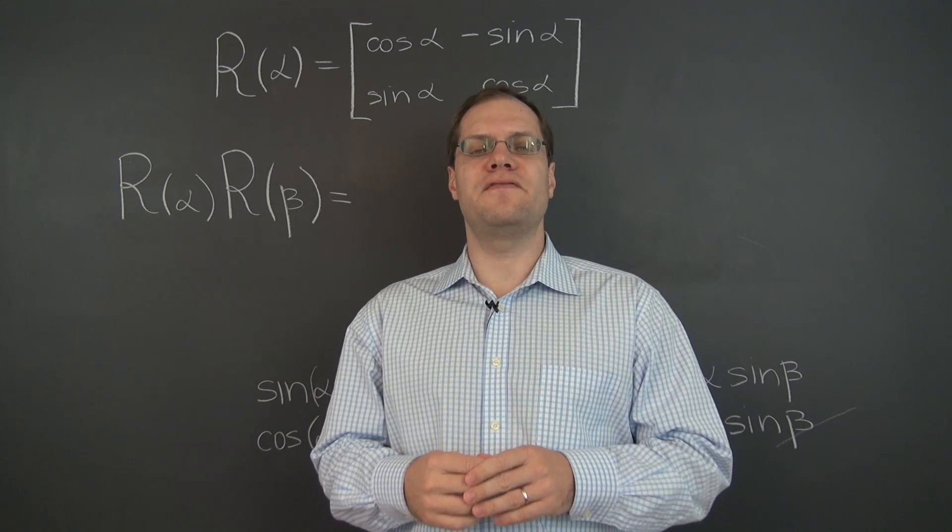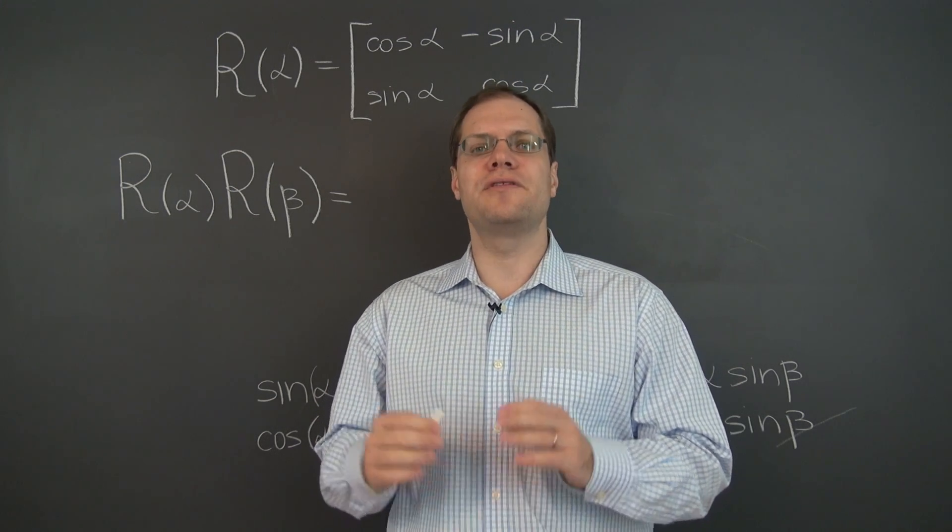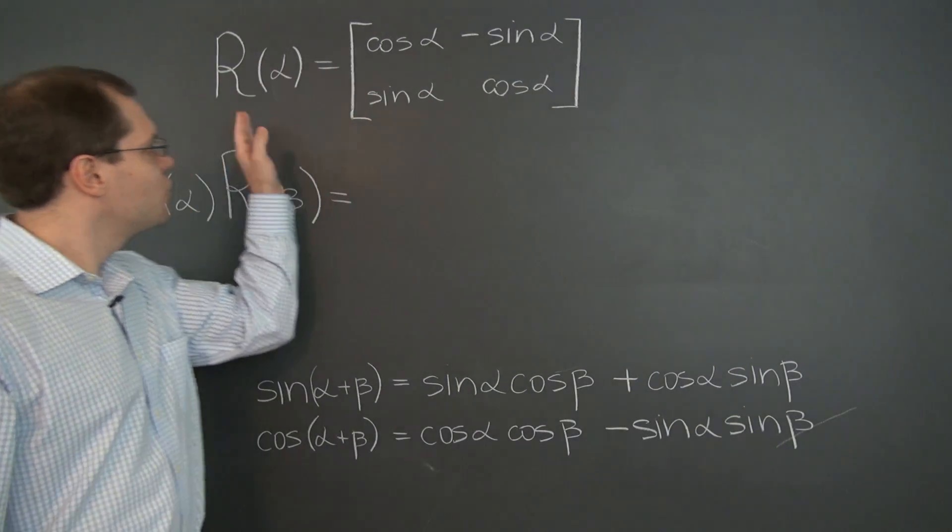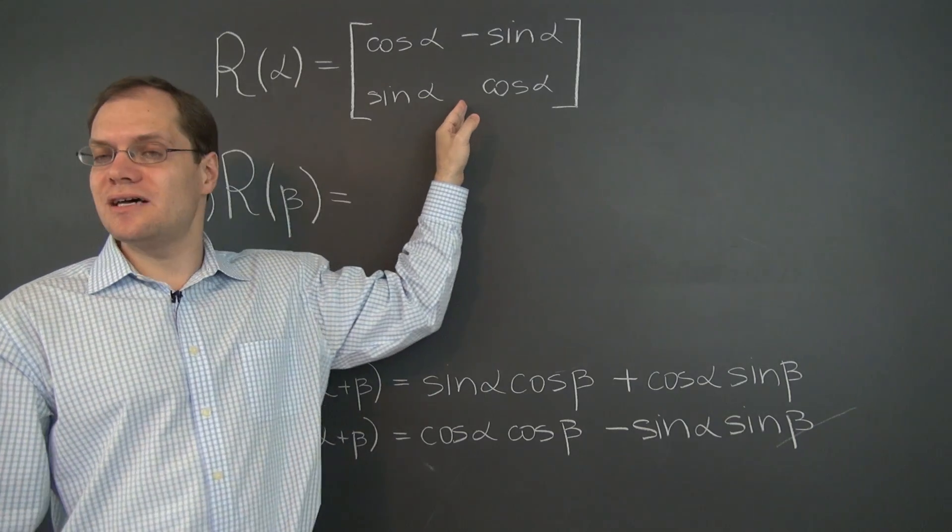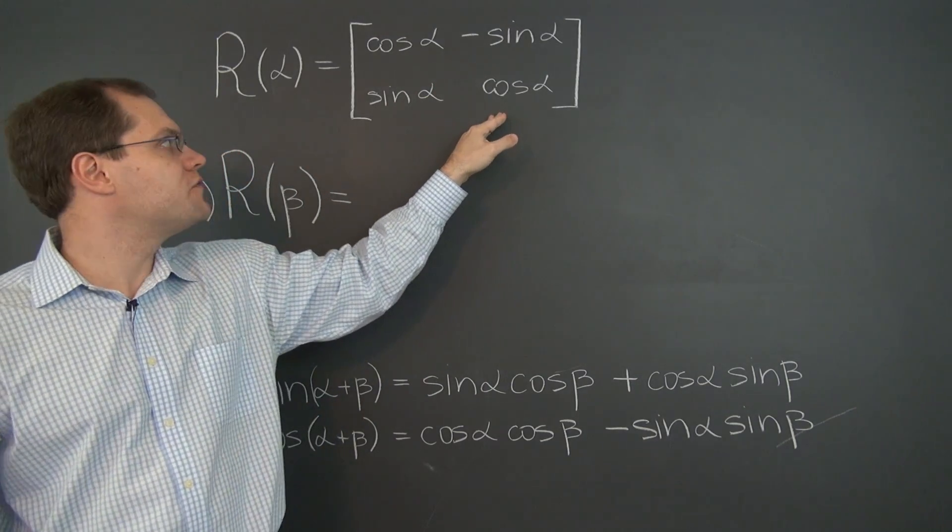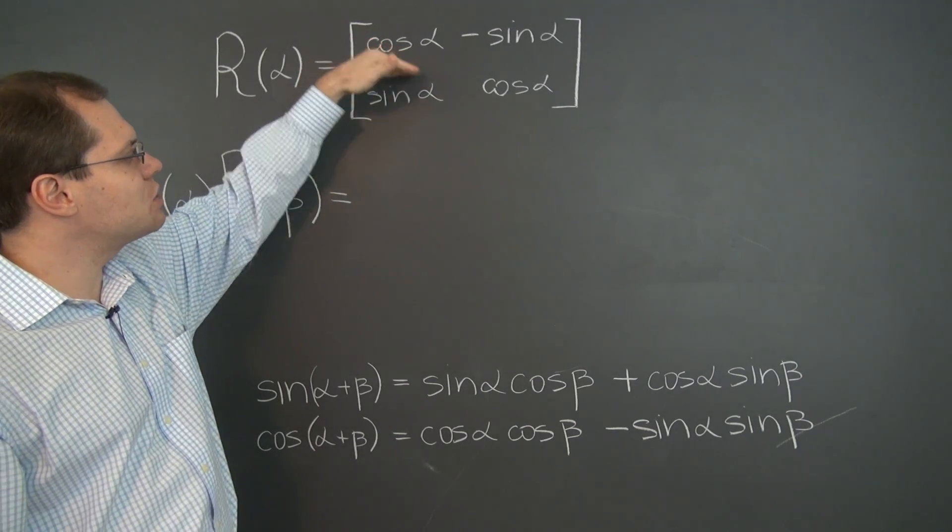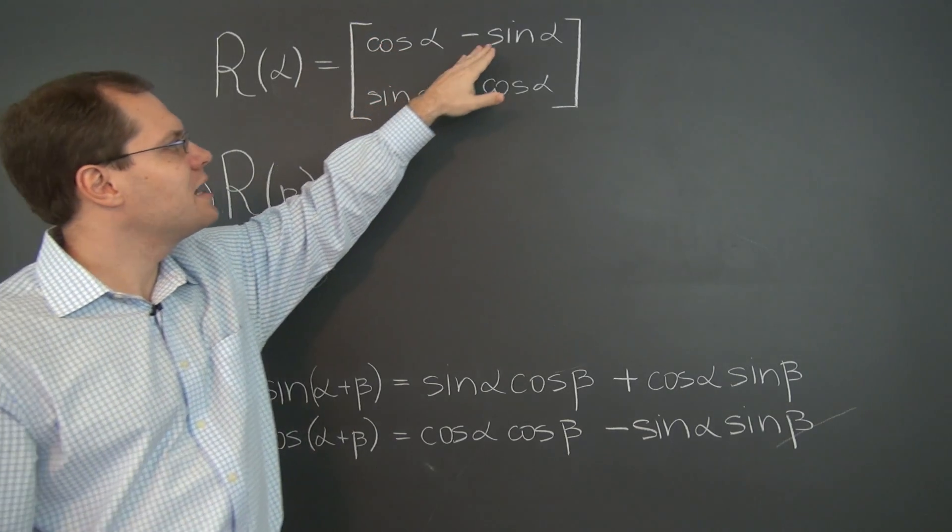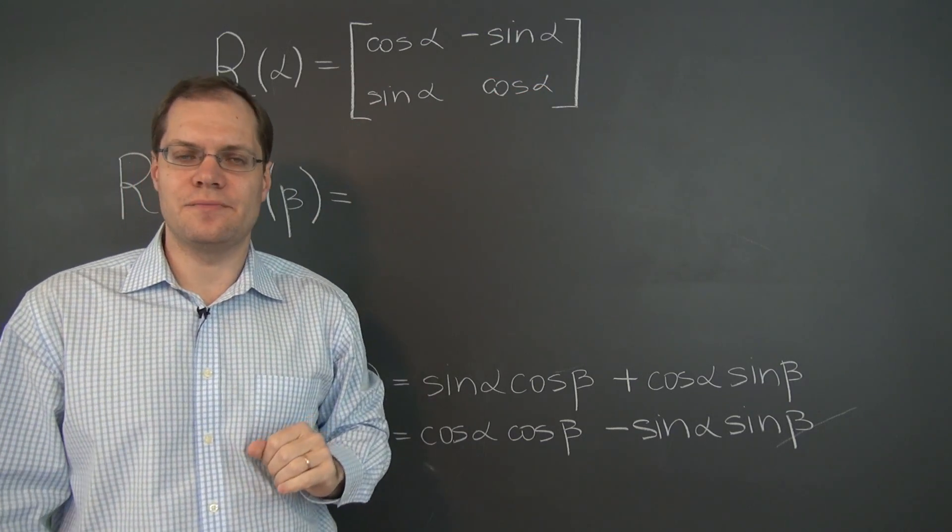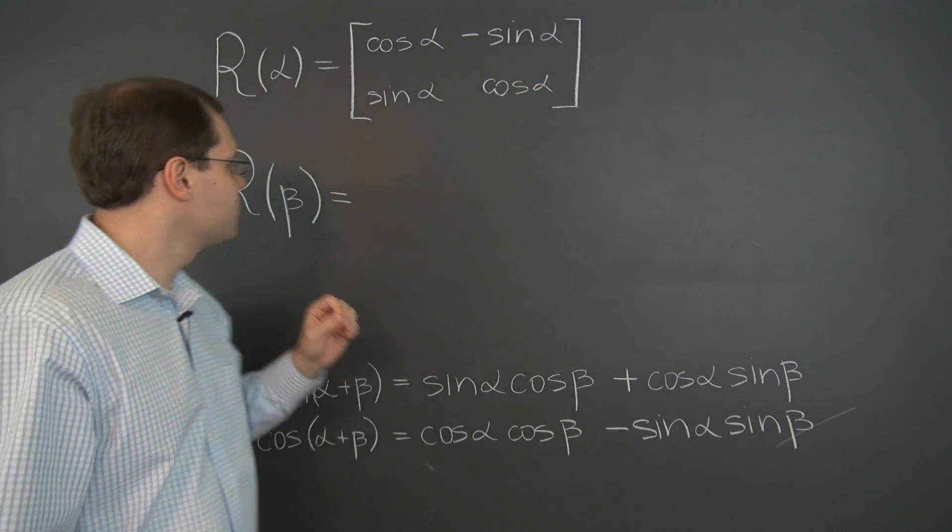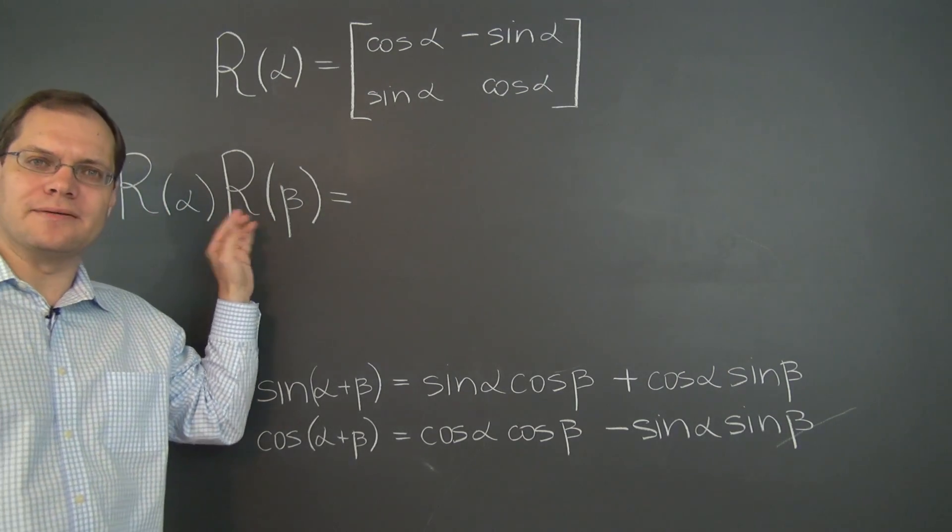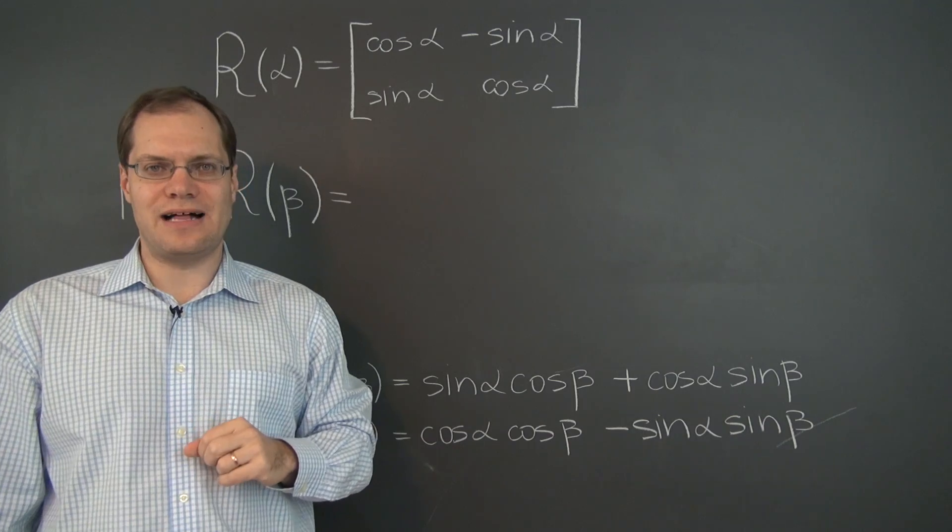In this video, we'll consider one fascinating matrix product with massive applications. Consider this matrix, call it R of alpha because it depends on one parameter. Inside that matrix are trig functions. The first column is cosine alpha, sine alpha, and the second column is minus sine alpha, cosine alpha. The product we'll consider will be R of alpha times the same matrix with beta plugged in instead of alpha.